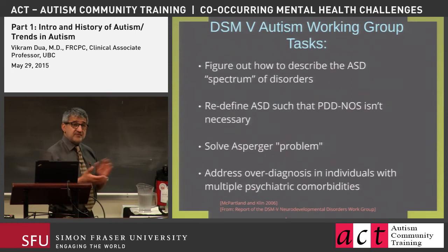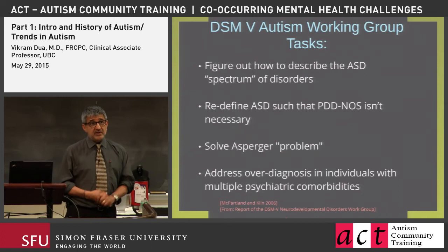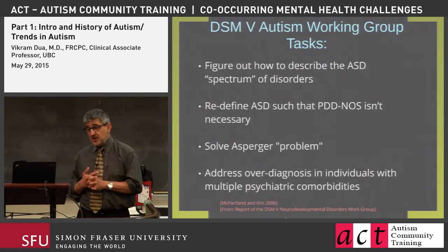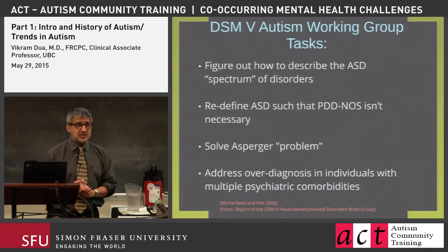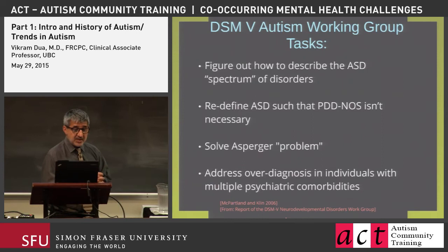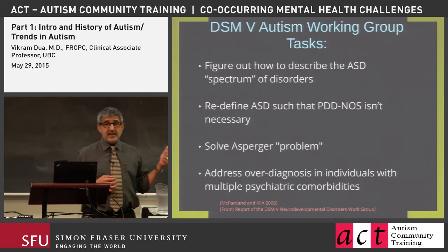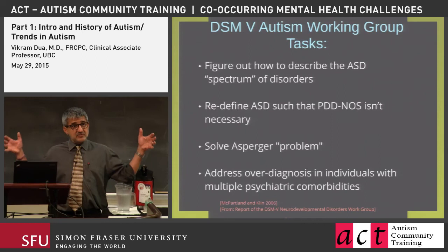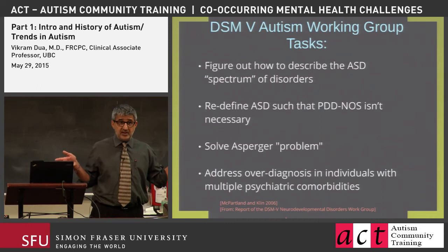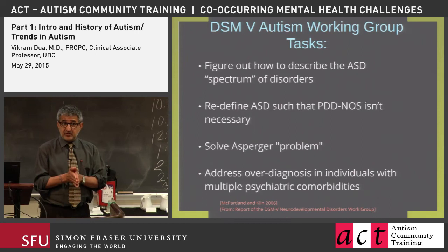DSM-5 comes along. In preparation for it, a number of working groups were established, including a neurodevelopmental group to work on autism. These working groups consisted of national and international experts who met several times per year over a number of months. Their tasks were to figure out how to describe ASD within a spectrum of disorders. This idea of an autism spectrum disorder had taken hold by this point — in fact, in BC we were well ahead of the game, having shifted over to ASD as a funding and eligibility category in 2003.